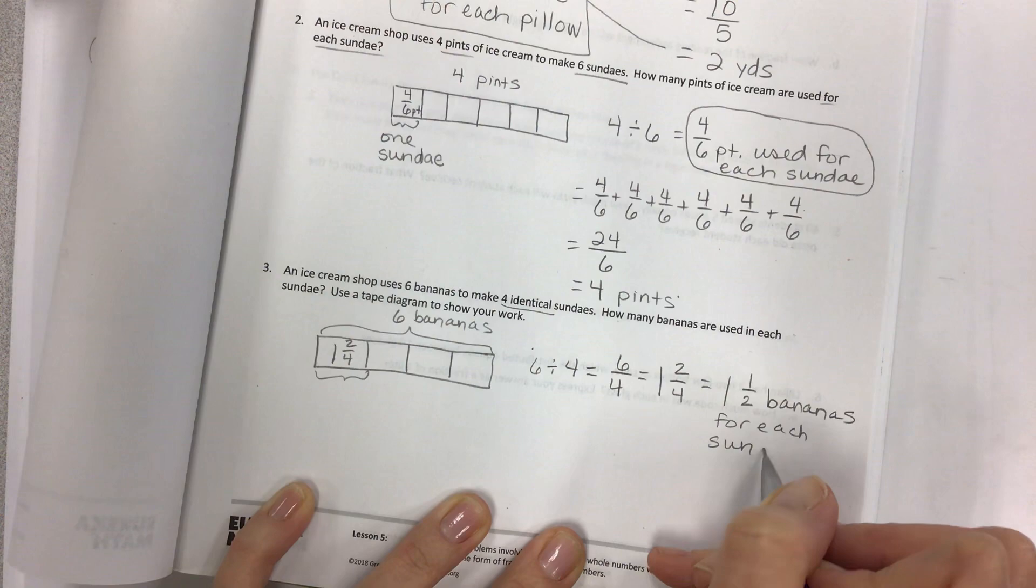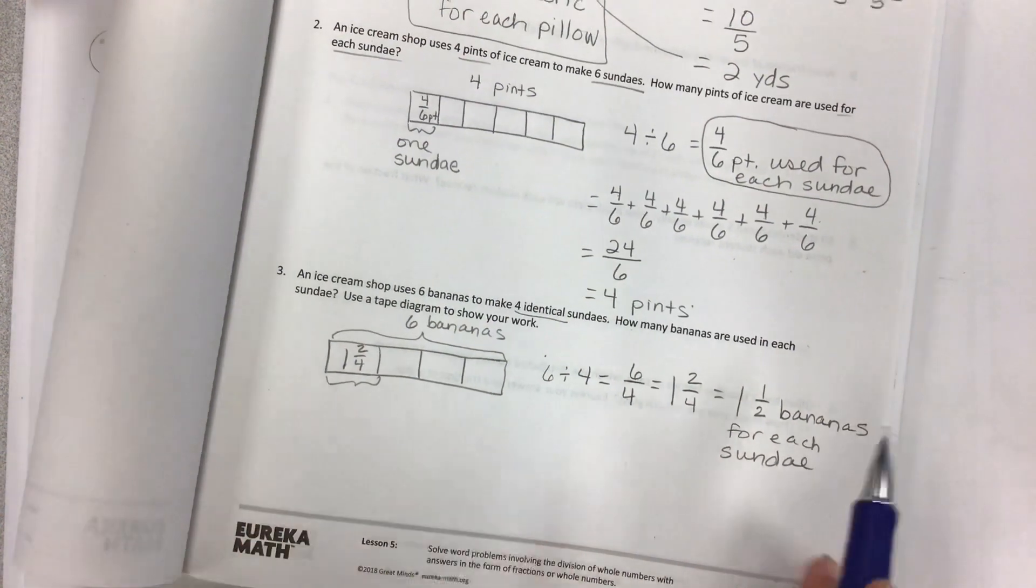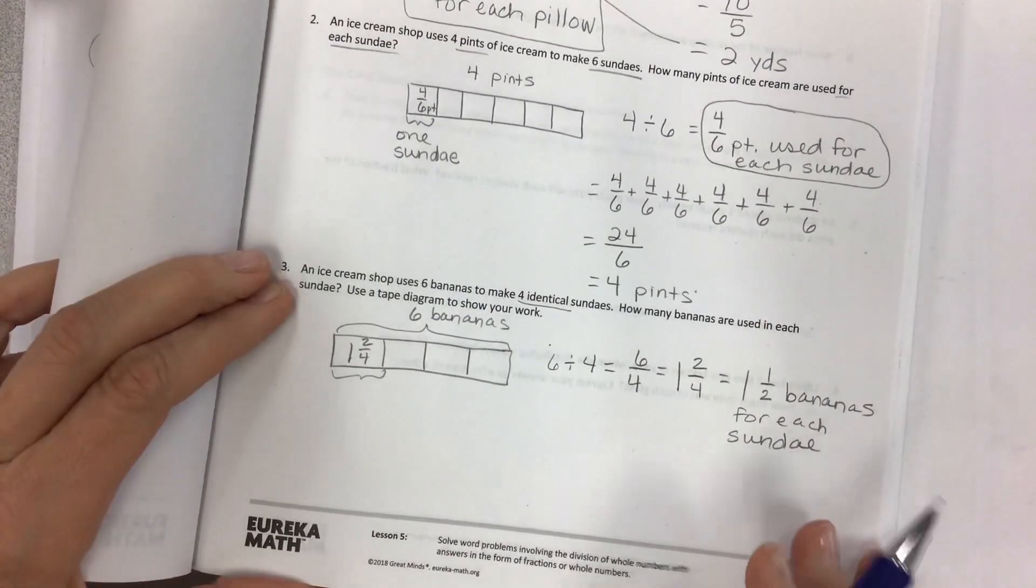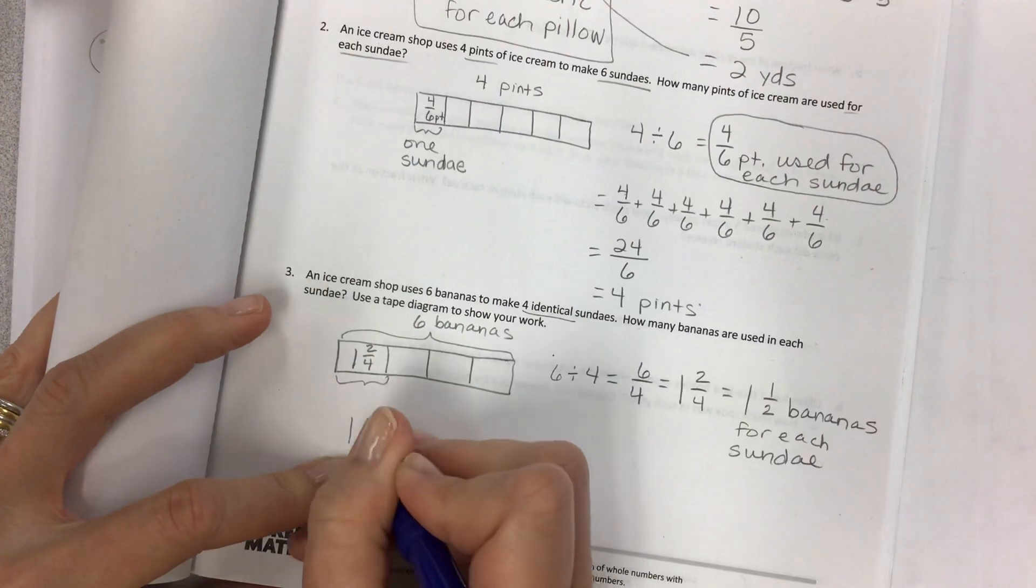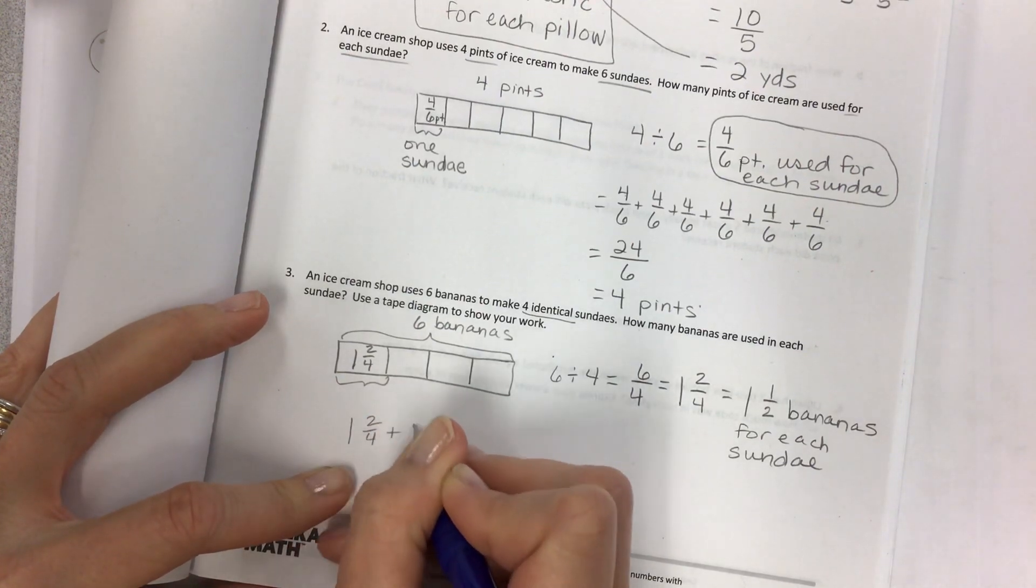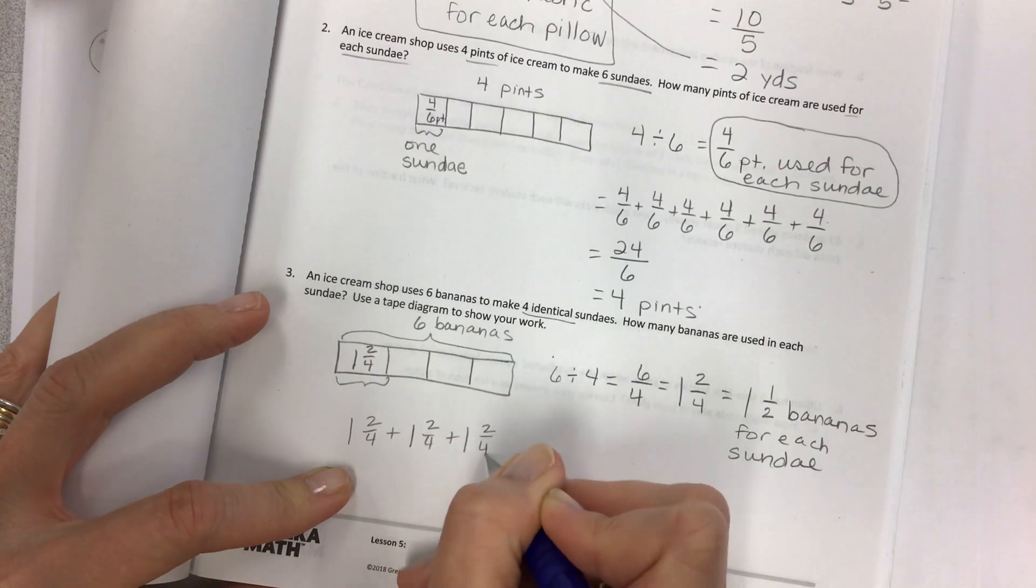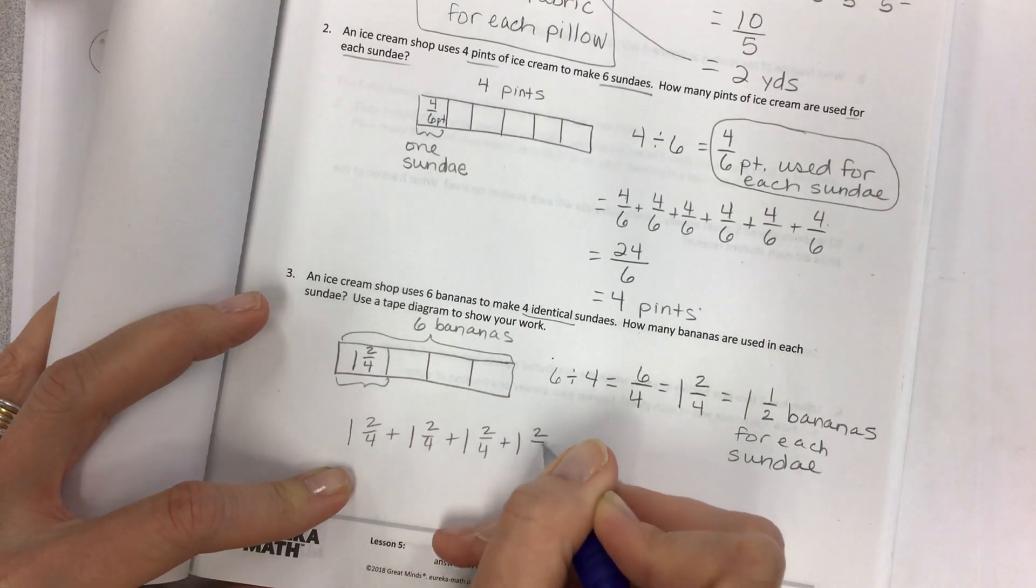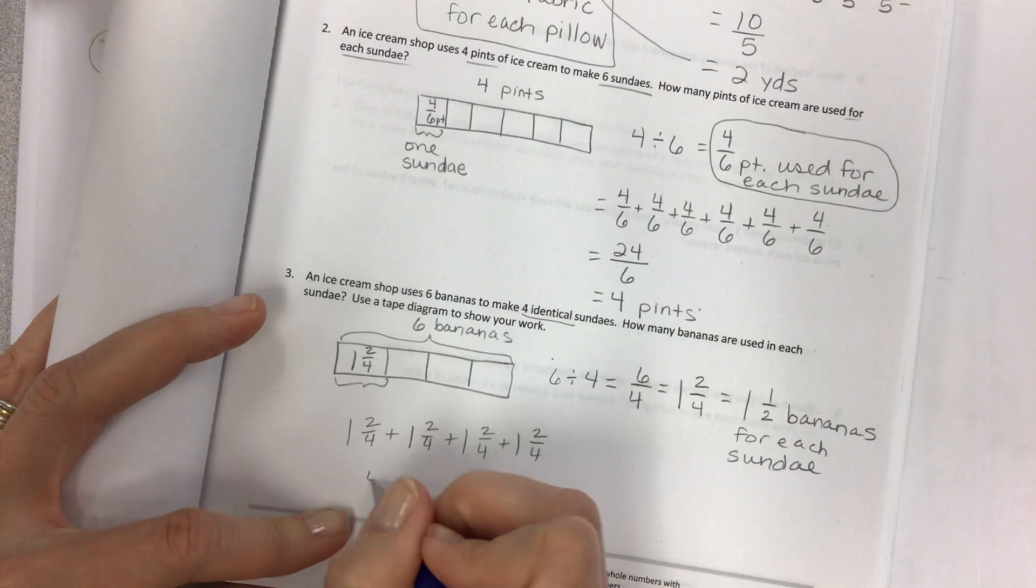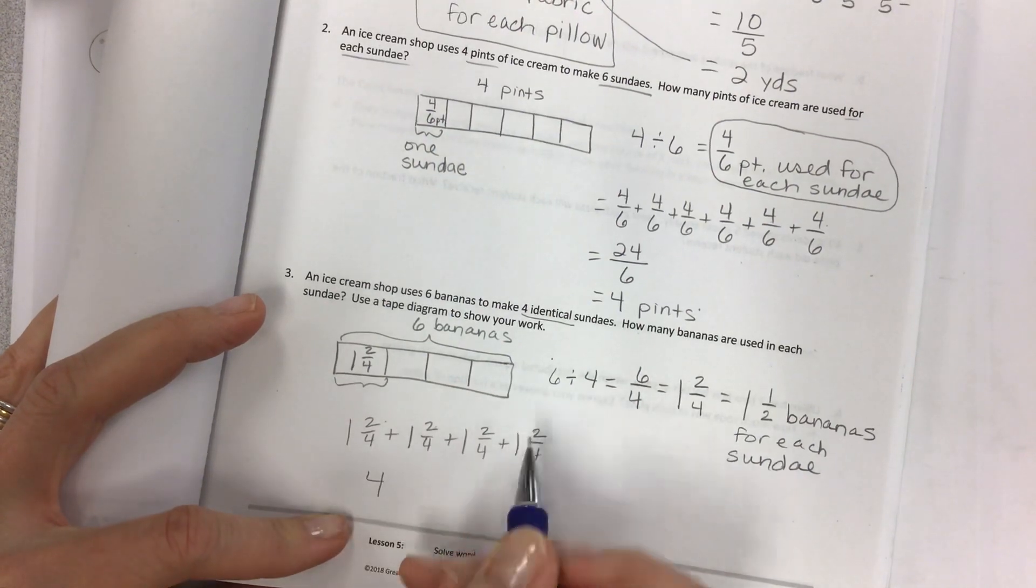Bananas for each sundae. Yes, sundae. I was like, didn't we just do that on the last one? Yes, we did. And we're doing it again. And so you can check your 1 and 2/4, plus 1 and 2/4, plus 1 and 2/4. One, two, three, four. Two, four, six, eight.